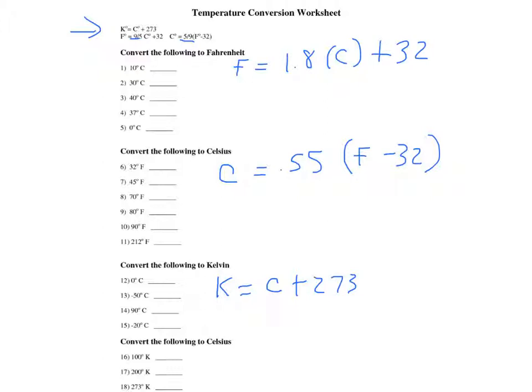If we were to convert from Kelvin to Celsius, Celsius would equal Kelvin minus 273. Once you have this, we can go back and we can solve.